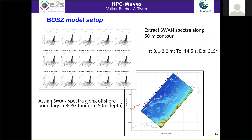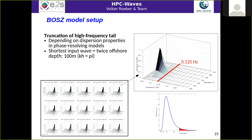Important for phase-resolving models is to ensure that dispersion properties are computed correctly. In this case it is very important to truncate the offshore spectrum to a wavelength of about 100 meters, which corresponds to twice the depth in this example. This is easily possible because the wave energy contained in high frequencies is minor and the overall components of the swell spectrum are maintained.